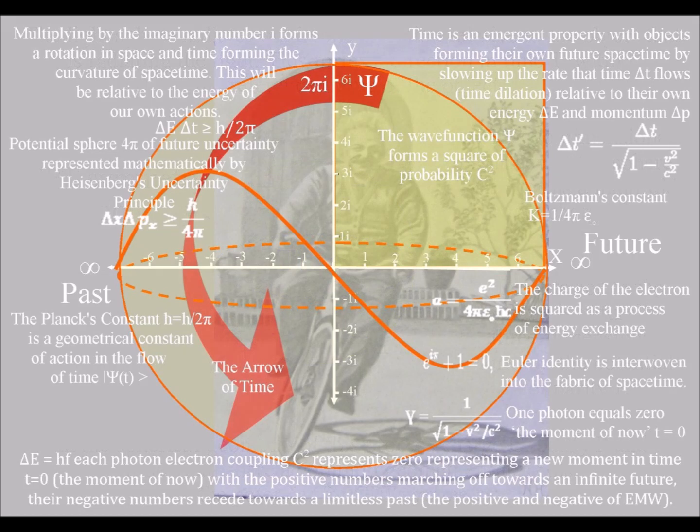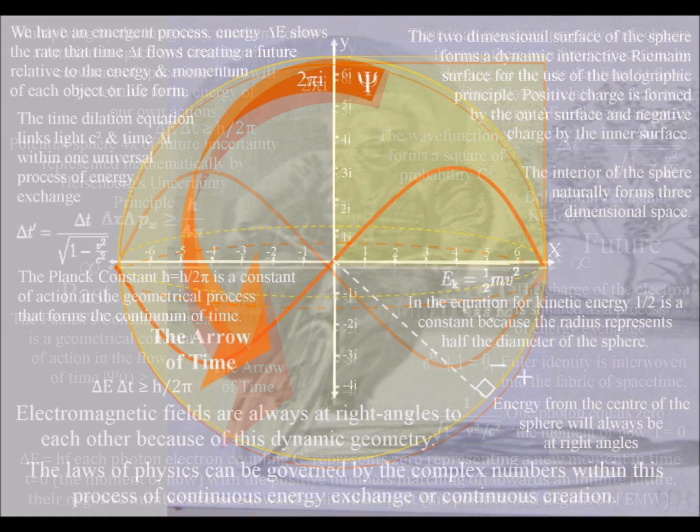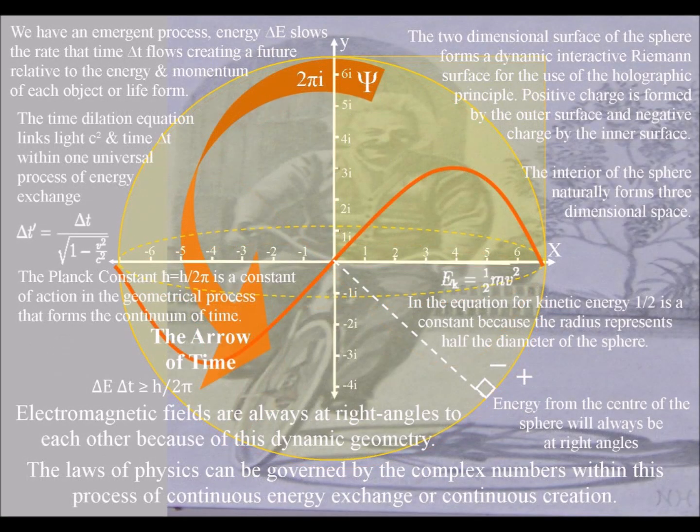Each point on the curved surface of the sphere has the potential for a new photon as a probabilistic uncertain future unfolds. This process gives quantum properties to space and time itself, giving us quantum gravity.